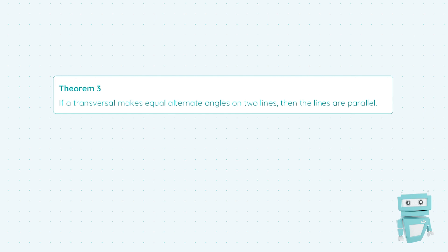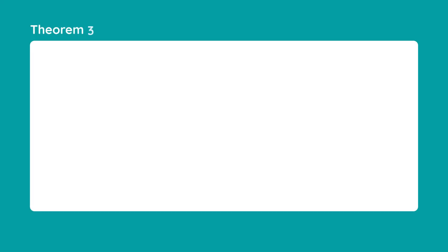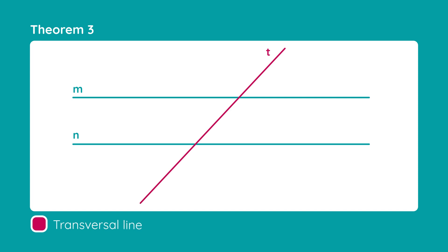So the first question you might naturally ask here is what a transversal is. In our case, t is a transversal, simply because it cuts both m and n. So a transversal line is just a fancy way of saying a line that cuts other lines.